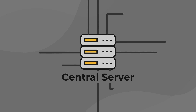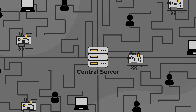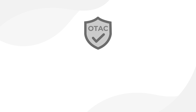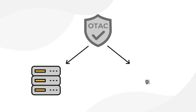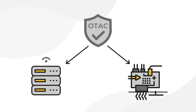Secondly, on a central server within the local network — ideal for bigger PLC operators managing larger numbers of devices and users. Finally, hybrid, where OTAC is deployed both on the central server and the PLC itself, allowing users to authenticate through a central server, but also if the network is down, users can still authenticate locally.